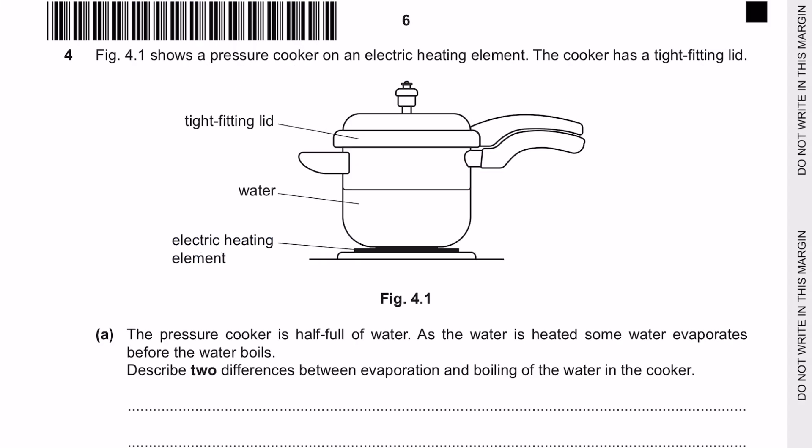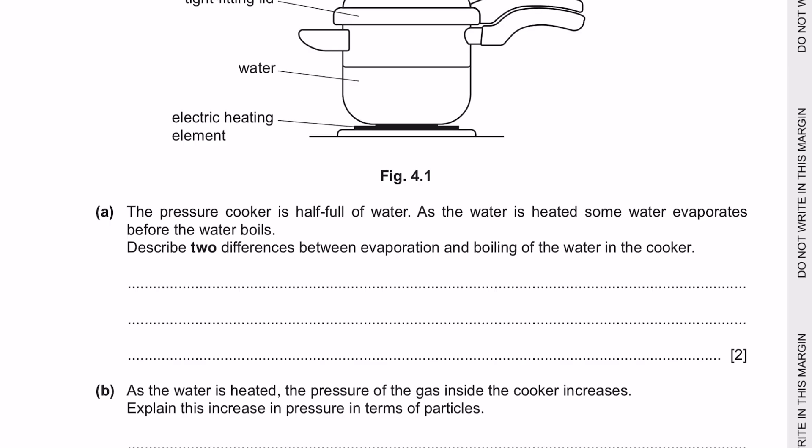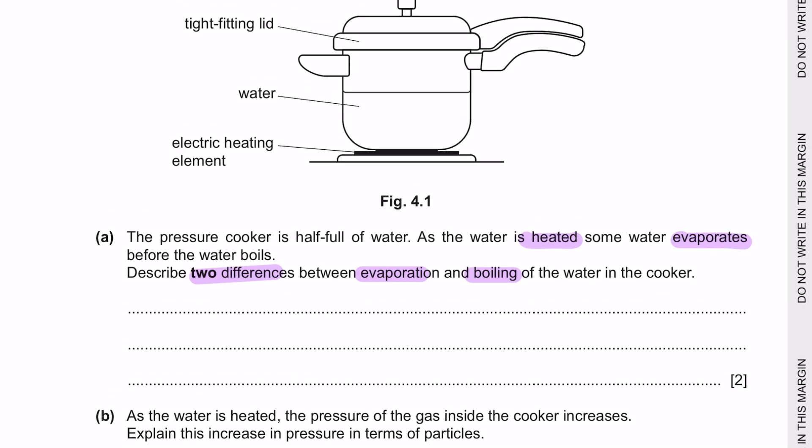Next question 4. Figure 4.1 shows a pressure cooker on an electric heating element. The cooker has tight fitting lid. The pressure cooker is half full of water. As the water is heated, some water evaporates before the water boils. State two differences between evaporation and boiling. Now evaporation only happens at the surface of the water whereas boiling happens throughout the entire liquid. And boiling can only happen at a specific temperature. For instance, water only at 100 degree Celsius will the liquid convert into water. Whereas for evaporation, it can happen at any temperature.